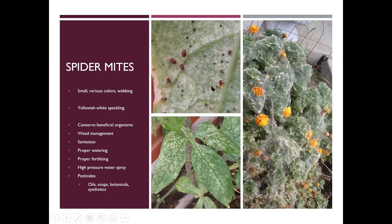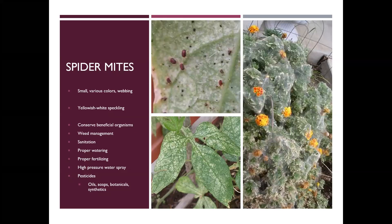Spider mites are going to start their population out on the underside of the leaves and they'll be crawling around down there. They do have mandibles, so they're rasping the surface of the leaf, and it causes this speckling look on the foliage. The real classic symptom is when you turn that foliage over — if you have webbing underneath the leaf, then you're certainly going to say there's spider mites.